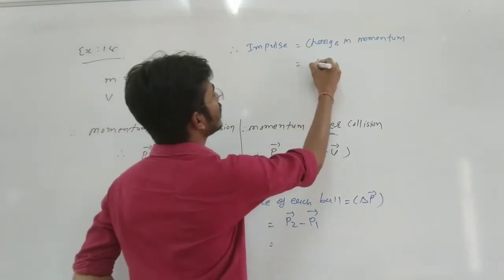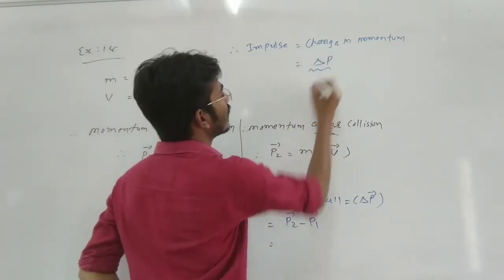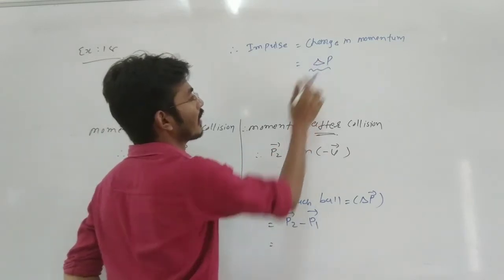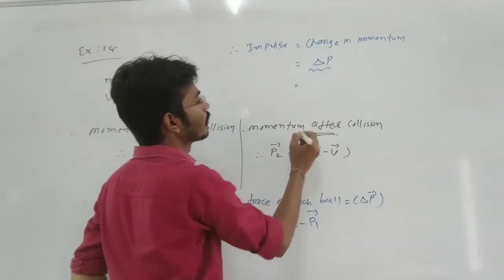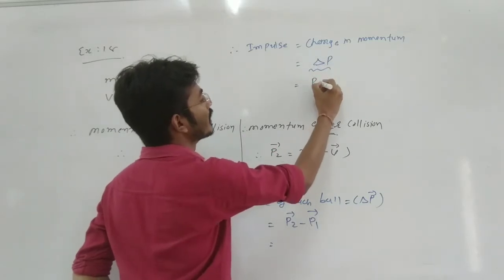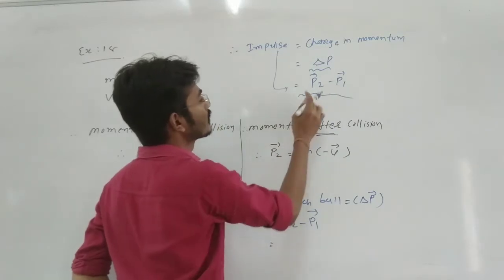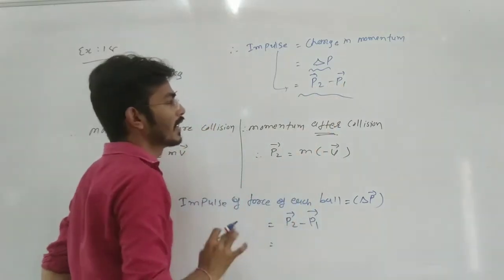Change in momentum, that means we can say as delta p. Momentum will change. Because of that, we are writing as delta. So what we have to find out? Delta p, that means p2 minus p1. We have to find out this impulse, p2 minus p1.